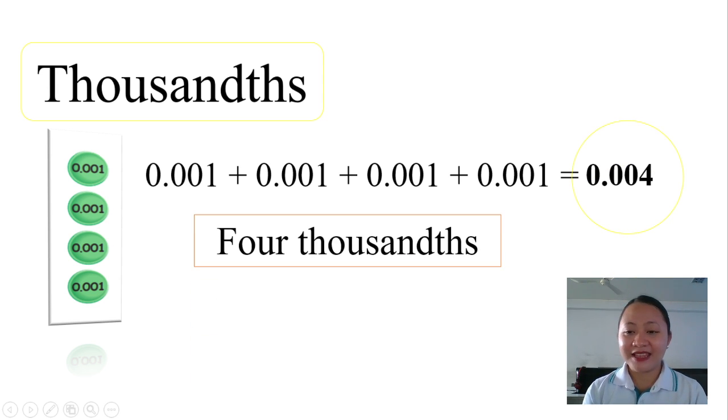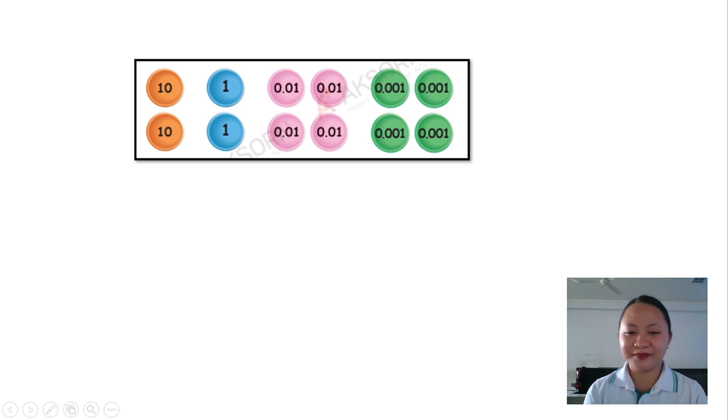Thousandths place has three decimal places. Let's have another example.